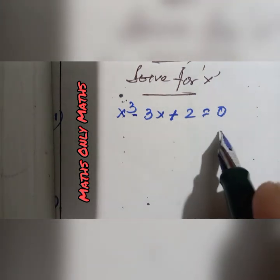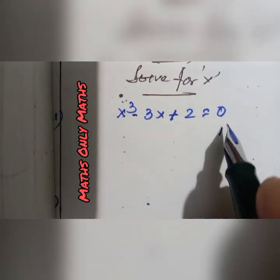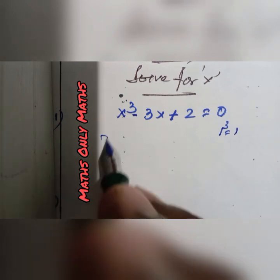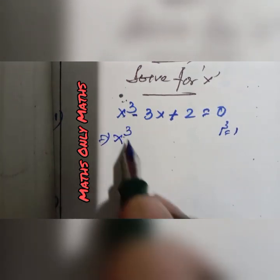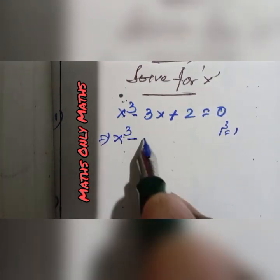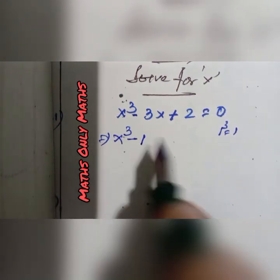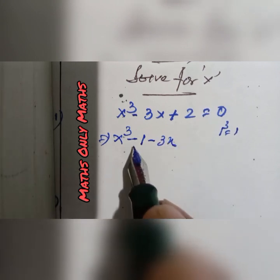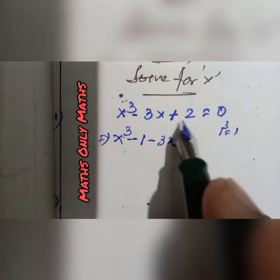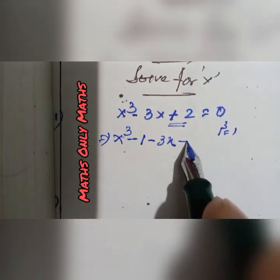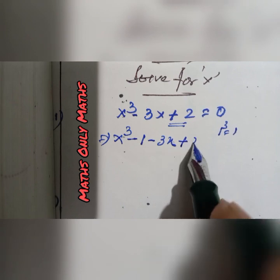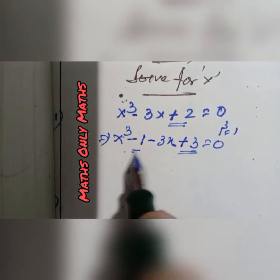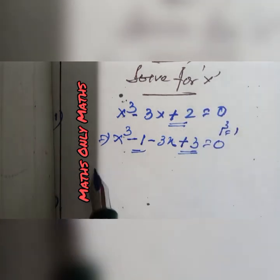Consider x cube. Since 1 cube is 1, I take x cube minus 1 minus 3x. Now I write minus 1, and to get plus 2, I write plus 3 equals to 0. So plus 3 minus 1 is plus 2.